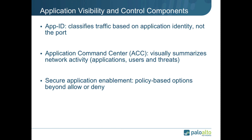We'll talk about App ID, the heart of the Palo Alto Networks firewall — the traffic classification mechanism that determines the exact application identity, not the port. We'll talk about ACC, or Application Command Center, which provides a visual summary of the network activity, including applications, users, and threats, and how that information can then be translated into secure application enablement policies.